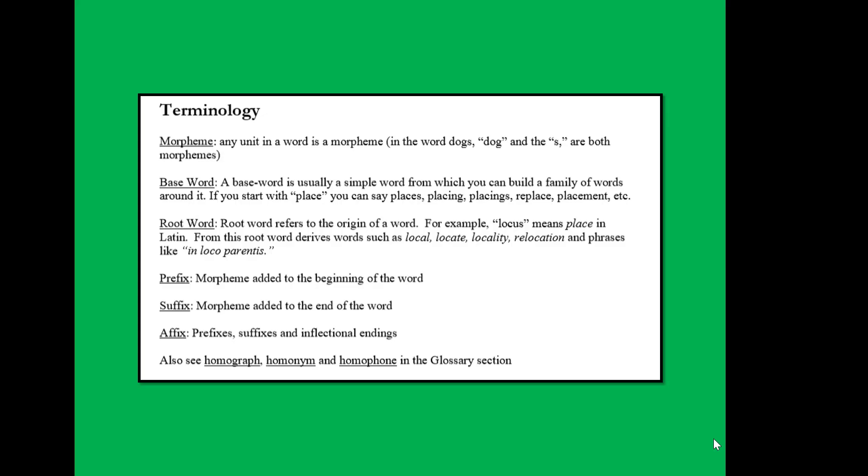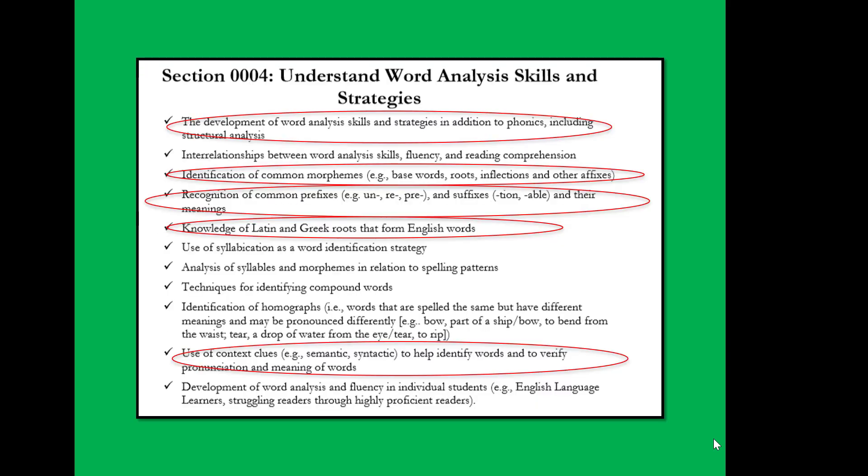You should be familiar with terminology from flashcards you've been practicing — these terms appear frequently on the W Fort exam. Examples include morpheme, base word, root word, prefix, suffix, and affix. Skills addressed in this presentation also connect to W Fort content: developing word analysis skills and strategies, including structural analysis, identification of common morphemes, recognition of common prefixes, knowledge of Latin and Greek roots to form English words, use of context clues to help identify words, and verifying pronunciation and meaning of words.